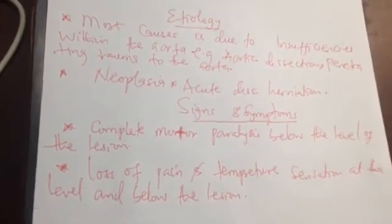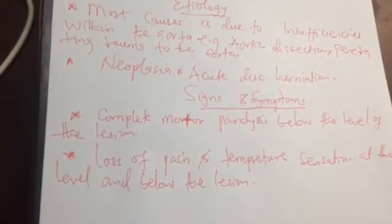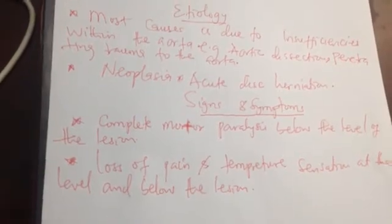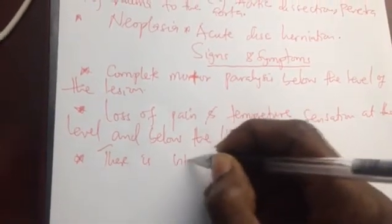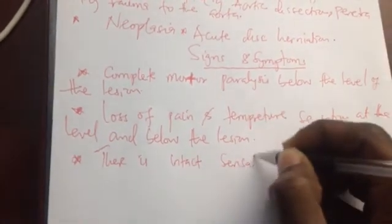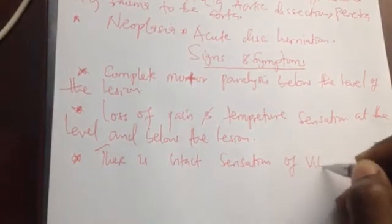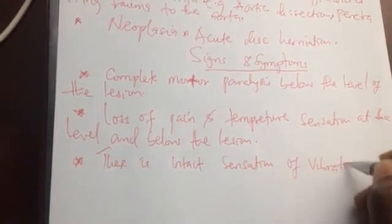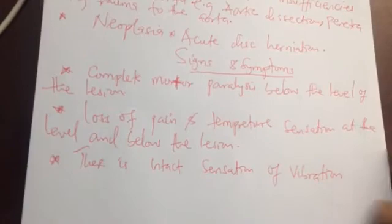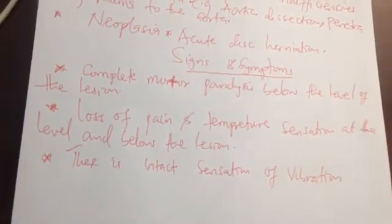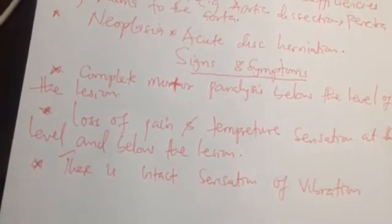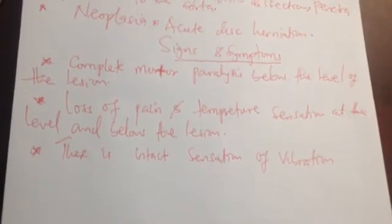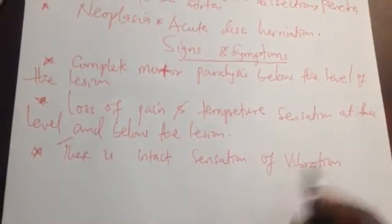However, there is intact sensation of vibration and proprioception due to the intact dorsal column medial lemniscus system. This is a key distinguishing feature because the dorsal column is not affected by this insufficiency, so vibration and proprioception are preserved.